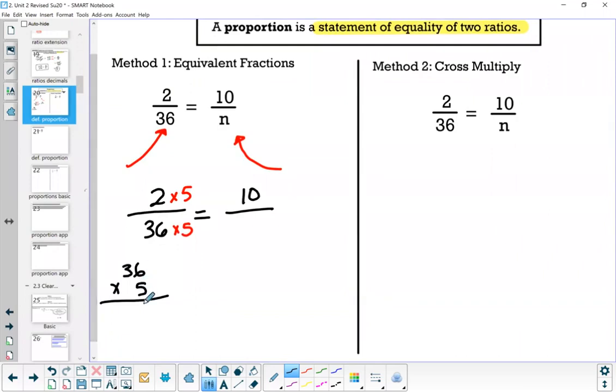So we have here 6 times 5 is 30. 5 times 3 is 15 plus the 3, we get 18, 180. So what this means is, if these are equivalent fractions, that must mean N equals 180.